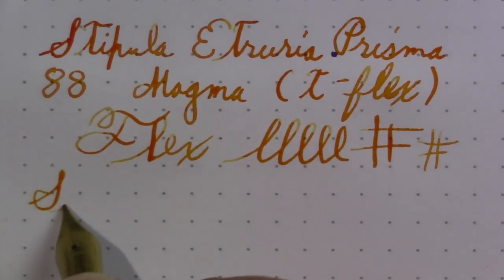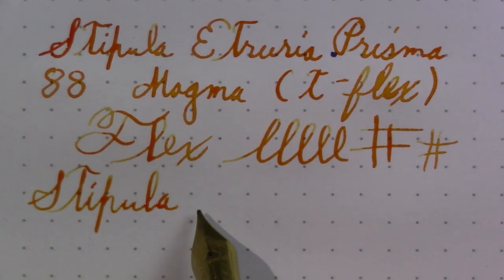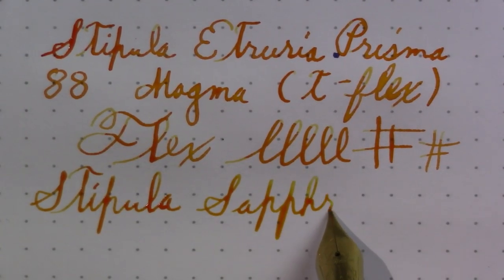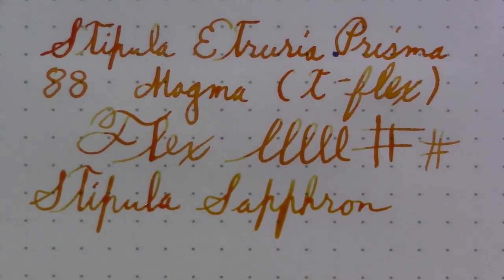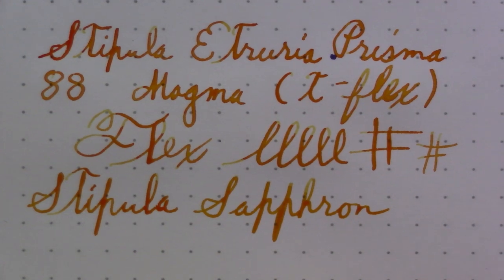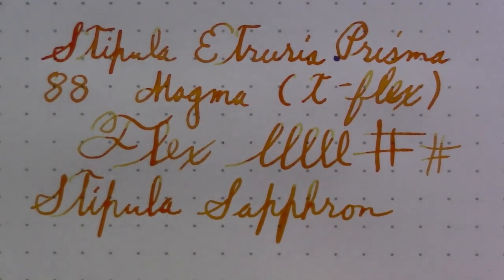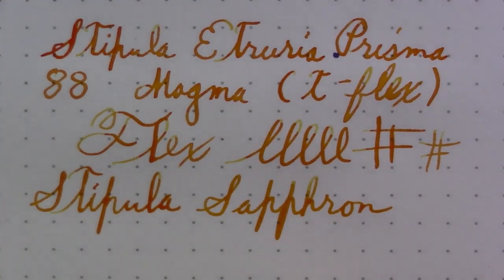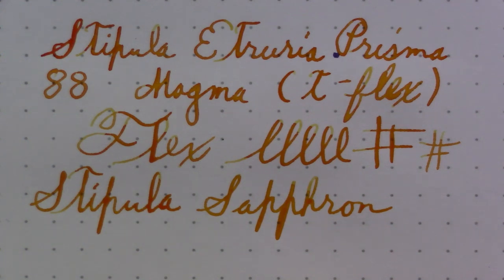This actually bled through my Tomoe River paper. I was using it to write a letter last night. Now the ink is Stipula saffronzo. And I've seen several spellings for this. It's an attractive ink no matter how you spell it, although it doesn't always play well in all pens. And I am somewhat wondering if that's the problem with this pen. Because I'll tell you what was happening. I was writing along. I got this pen on Monday. I'm filming this on Wednesday.